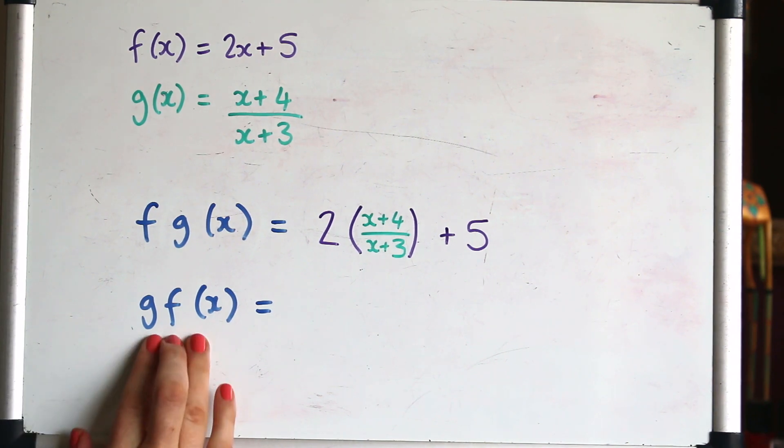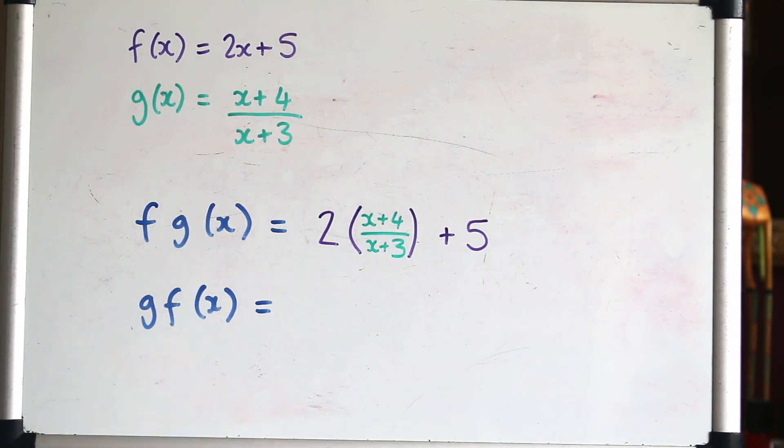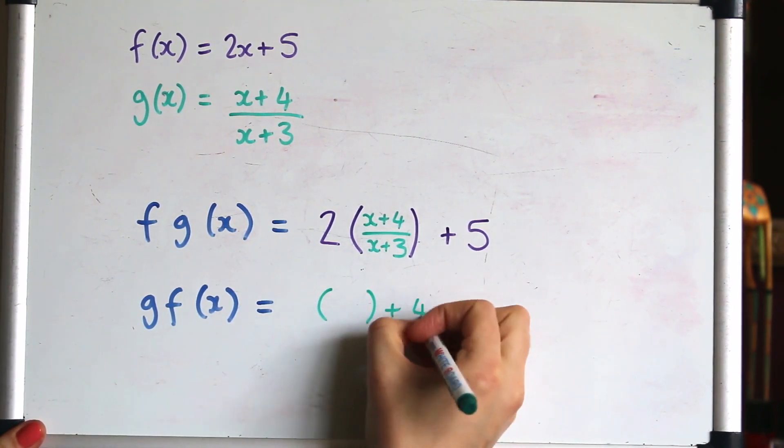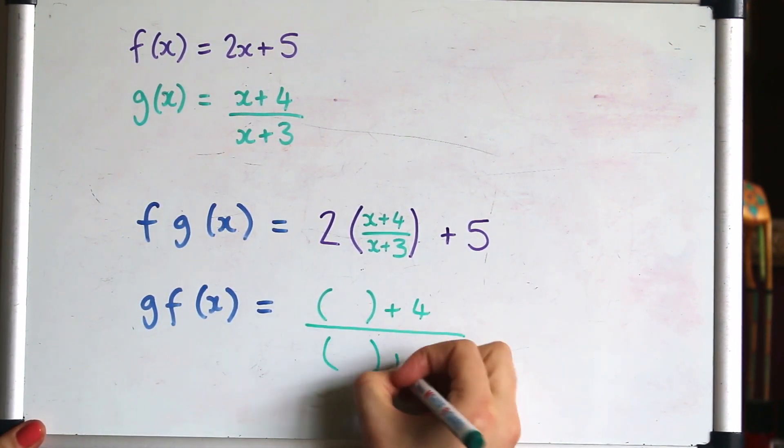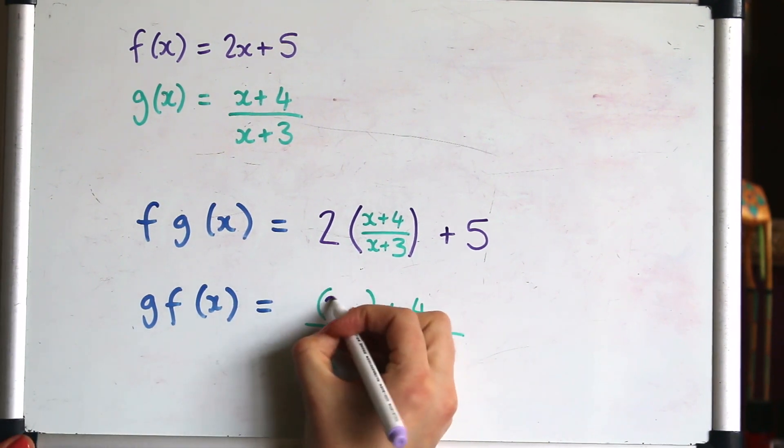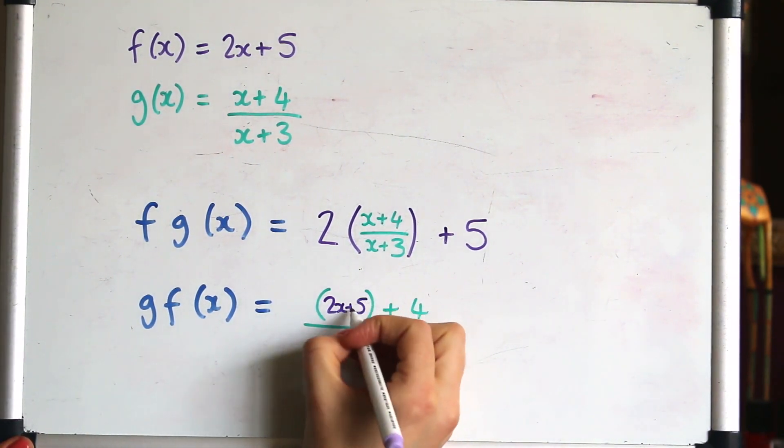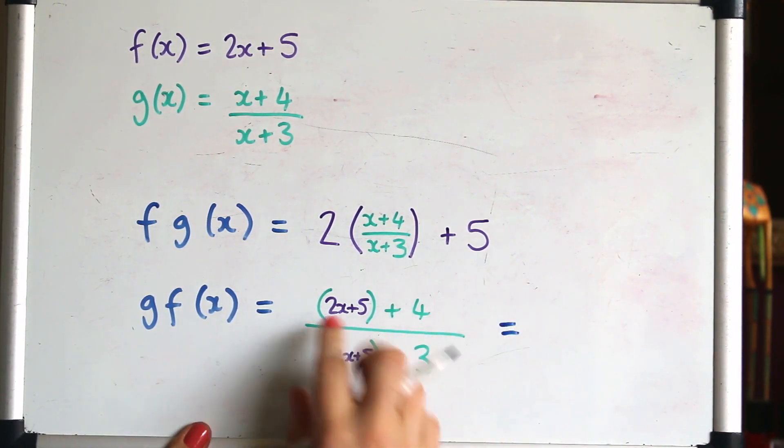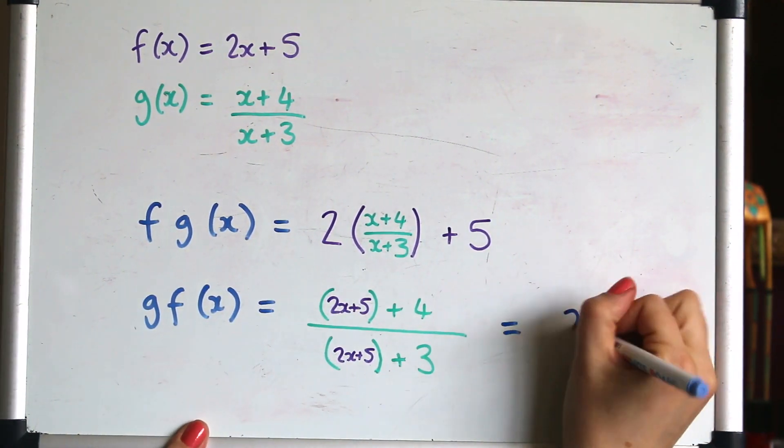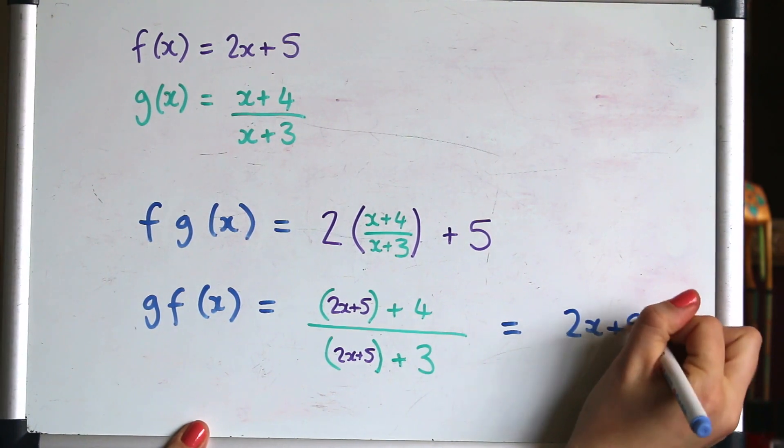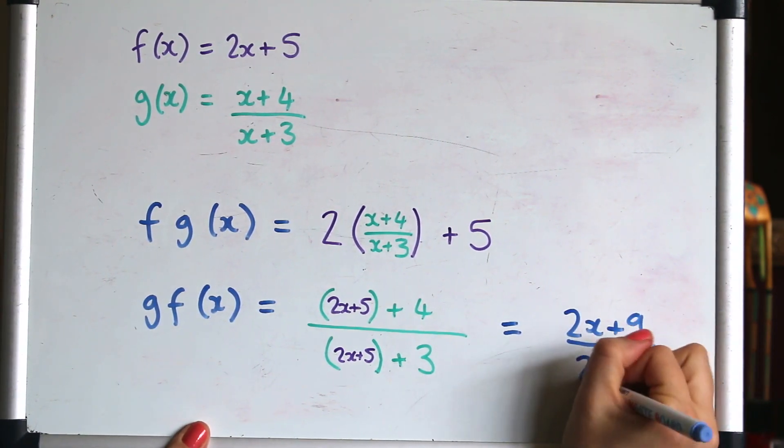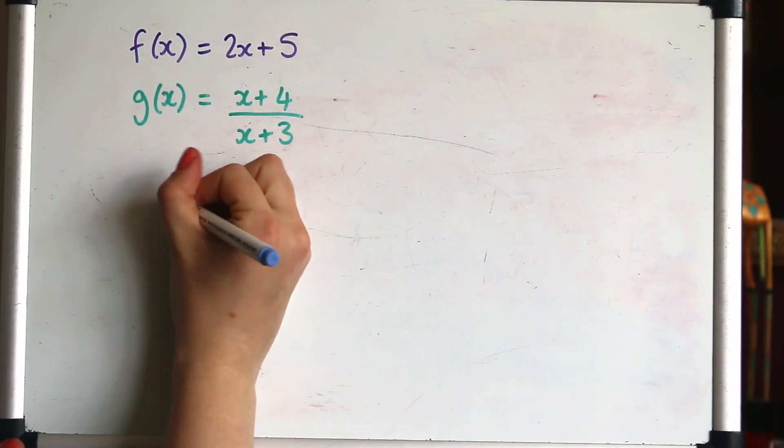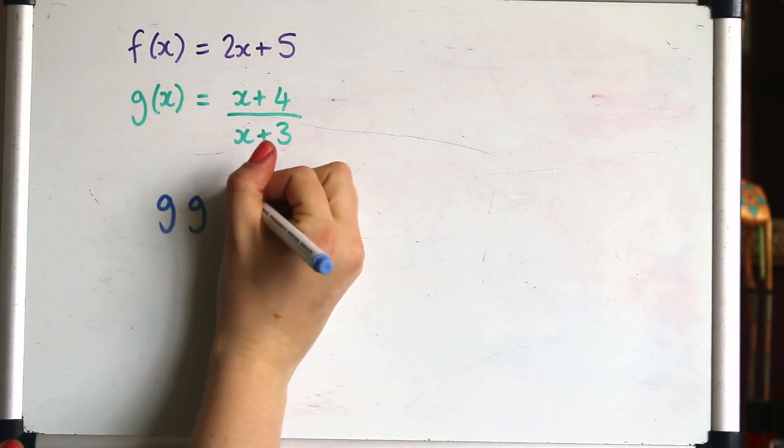Let's do g of f. So we're starting with g as the outer function. So we've got some stuff plus 4. And then we're inputting the 2x plus 5. And this one we can really easily collect those terms and simplify them. So remove the brackets and collect those up.